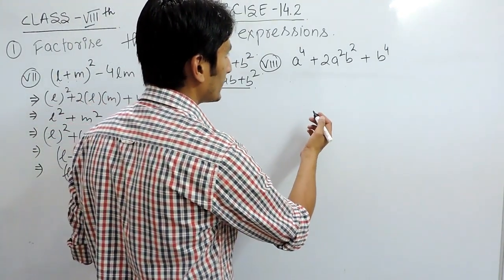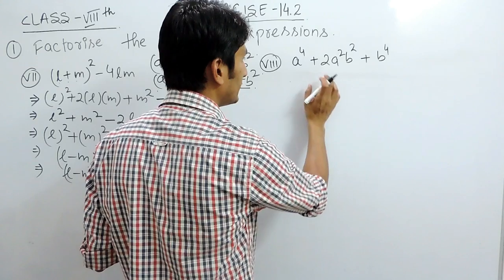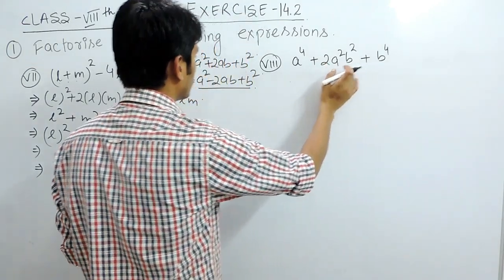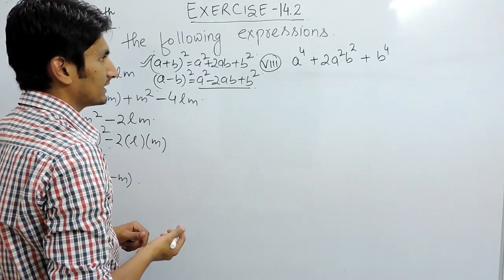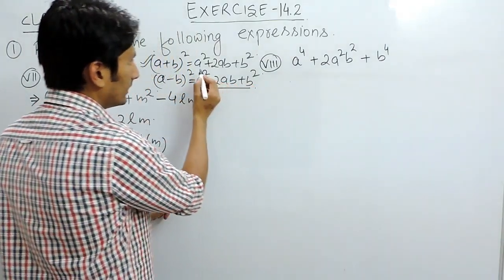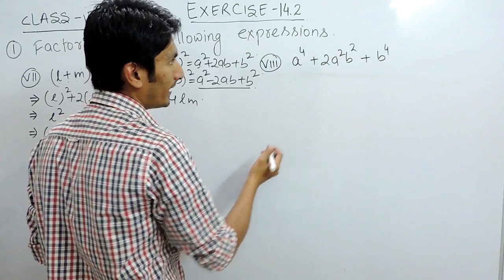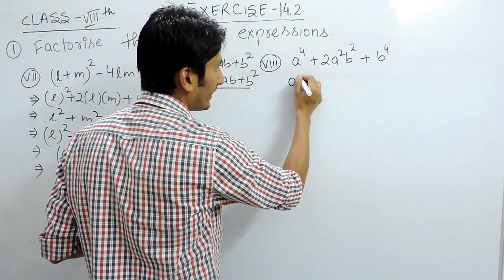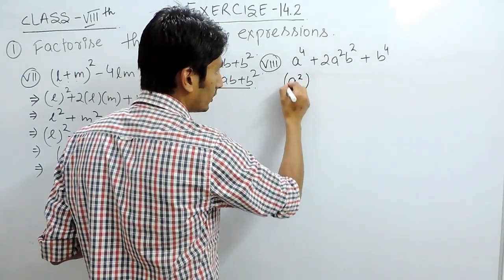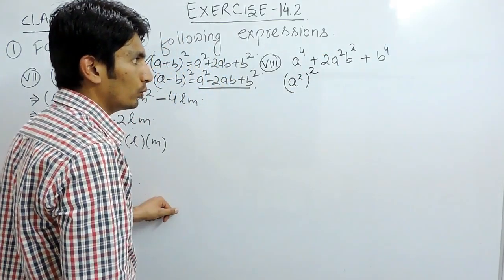In the second, again, we have to use a suitable identity because these are plus terms. So first of all, we have to use this one identity. Now, we have to convert a square. Here it is a raised to the power 4. So if I write it as a square whole raised to the power 2.